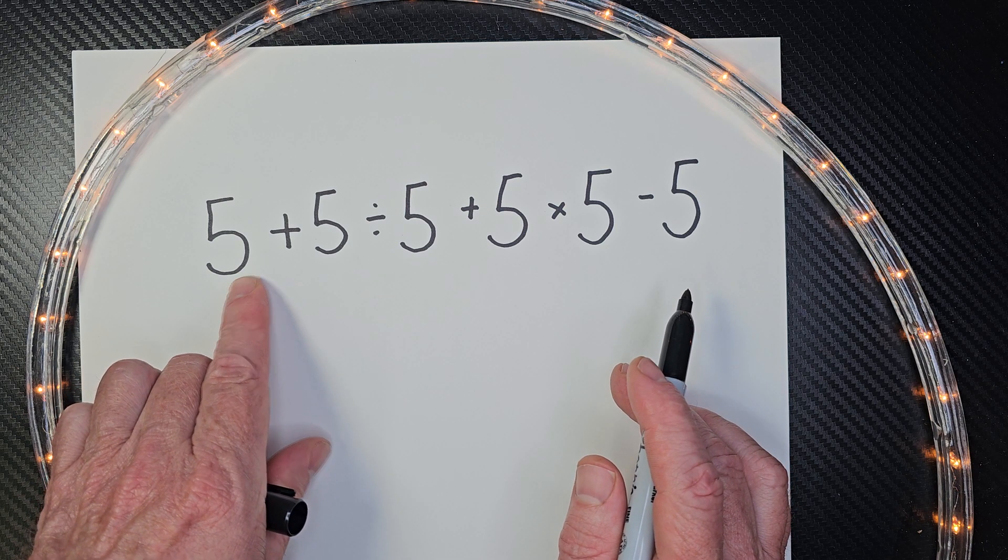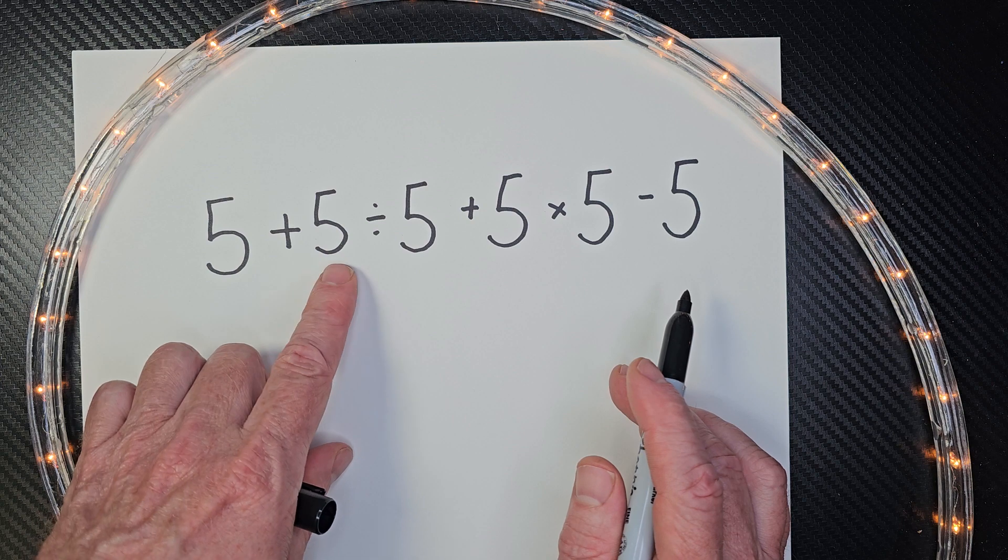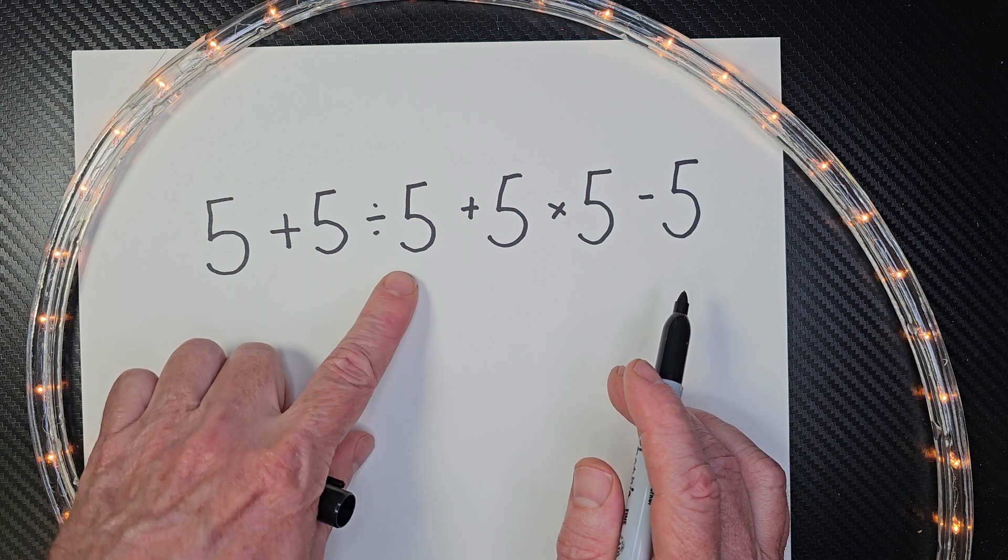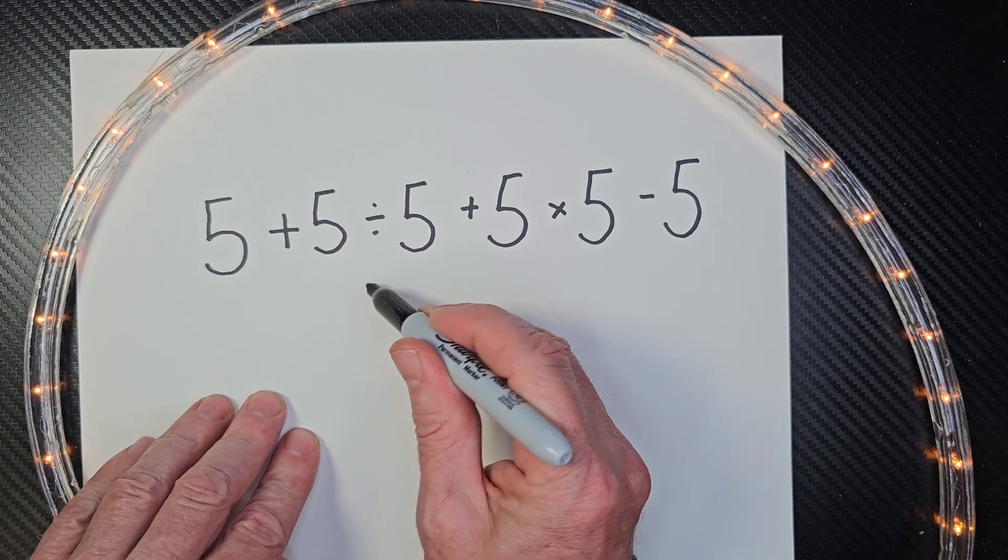I know you want to go 5 plus 5 is 10 and then 10 divided by 5. Don't do it! You need to do this one here first. 5 divided by 5 equals 1.